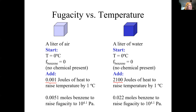By the same token, if I wanted to raise the fugacity of benzene up to the saturation point — which is 10 to the 4.1 pascals, since we're using pressure as our measurement of fugacity — I would add 0.005 moles of benzene to the liter of air to reach that fugacity. But in the water, I need to add more: 0.022 moles, about four times more benzene, to get the fugacity up to 10 to the 4.1 pascals.